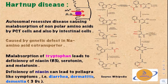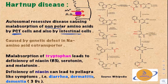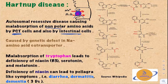Hartnup disease is an autosomal recessive disease that causes malabsorption of the nonpolar amino acids. This occurs at the proximal convoluted tubule and the intestinal cells. This disease is caused by a genetic defect in the sodium amino acid co-transporter, or symporter, present in the brush border of the proximal convoluted tubule cells. This transporter is deficient and is present in both the proximal convoluted tubule cells and the intestinal cells, leading to malabsorption of nonpolar amino acids.